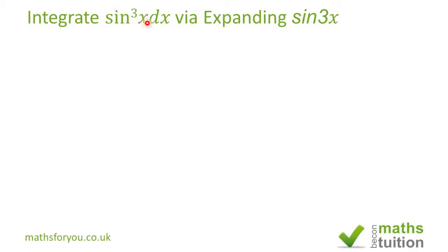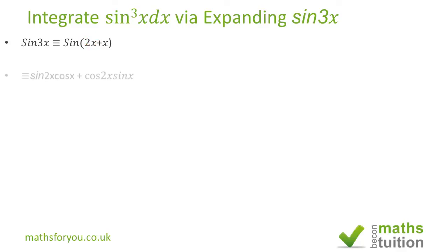Right, sine 3x is the same as sine of 2x plus x. Now if we regard 2x as A and x as B, we should try and expand this as you do for sine of A plus B. So that becomes sine 2x cos x plus cos 2x sine x.